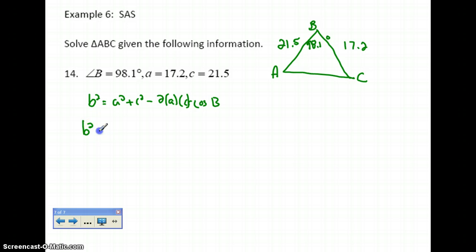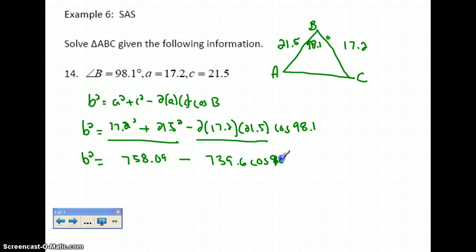I don't know B squared, so that's the variable. I know A is 17.2, I'm going to square that, plus 21.5 squared, minus 2 times 17.2 times 21.5 times cosine of 98.1. So a lot of this I can figure out right now. When I add those two quantities together, I get 758.09. And then if I multiply these three terms together, I get 739.6 cosine 98.1.